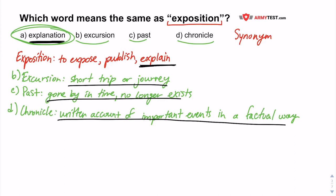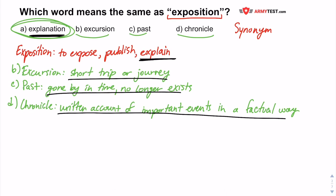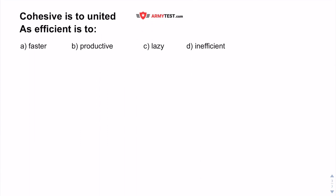Just a note on these questions: it requires you to know a lot of definitions, and if you don't know all of them it's okay — define as many as you can and then compare them. Moving on to question two, which says: cohesive is to united as efficient is to blank — which could be A. faster, B. productive, C. lazy, or D. inefficient.